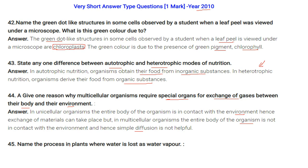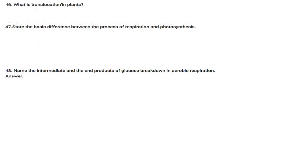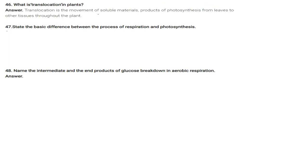Transpiration is the process in plants where water is lost as water vapor. Translocation is the movement of soluble material — products of photosynthesis — from leaves to other tissues throughout the plant.